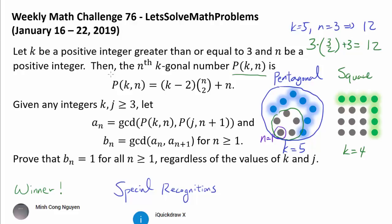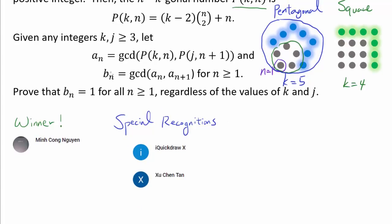So what exactly are we doing? Given any integers k and j greater than or equal to 3, we're going to let a_n be the greatest common divisor of p(k, n) and p(j, n+1), and b_n be the GCD of a_n and a_{n+1} for n greater than or equal to 1. We wish to prove that b_n is equal to 1 for all n greater than or equal to 1, regardless of the values of k and j — which is quite fascinating.